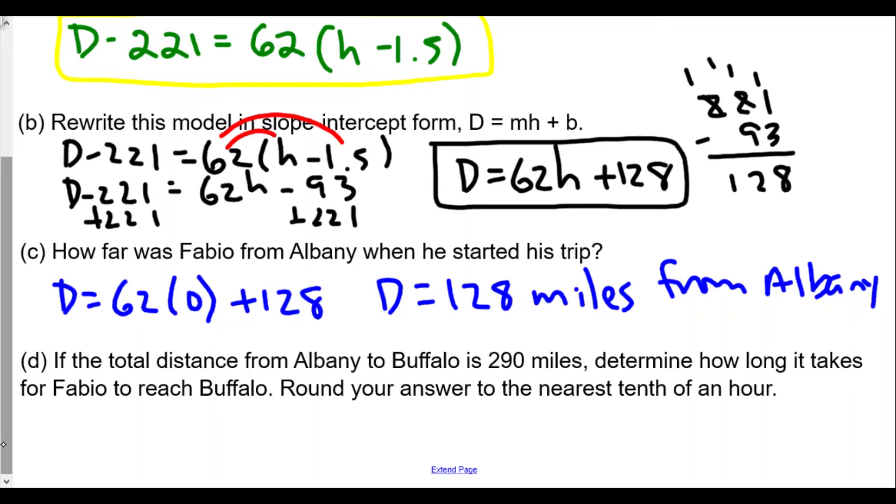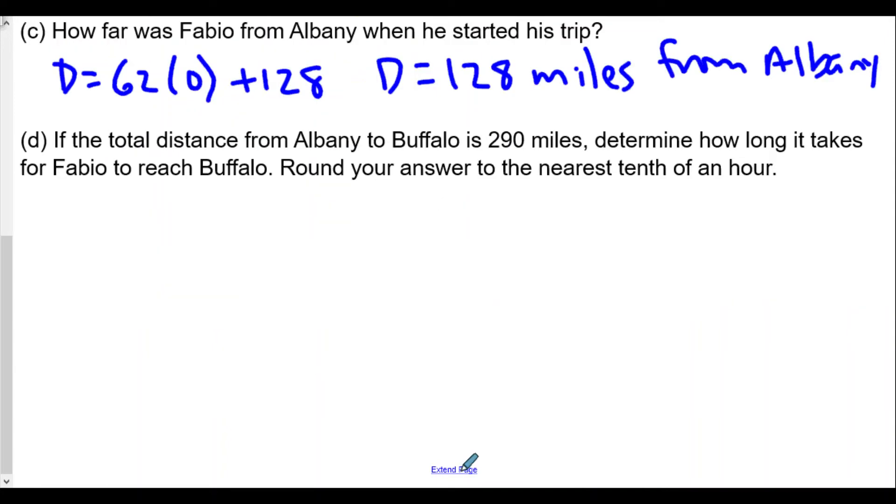So if it's 290 miles and he is traveling in this case at 62 miles per hour, we're going to plug in the value of 290 into our distance here and figure out the amount of time. So we've set 290 = 62h + 128.